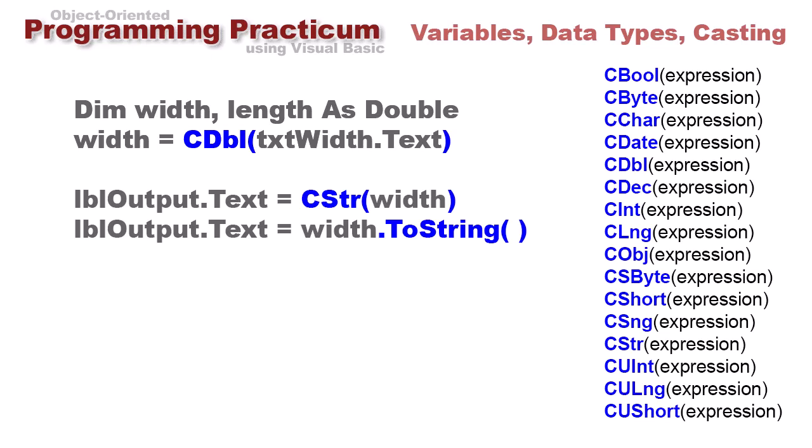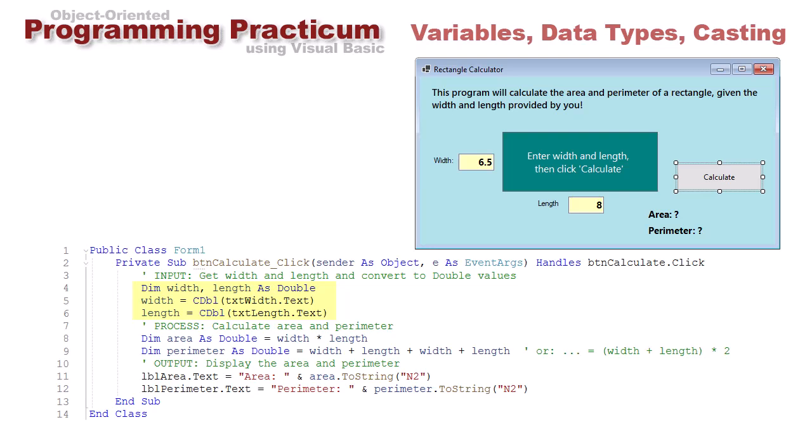More commonly I'd probably use lbl output dot text equals width dot ToString. Either of those statements would work. We see the ToString method used down here for the output of our rectangle calculator. We're taking lbl area dot text equals a little string of "area" and I'm concatenating with the ampersand, adding to that string the numeric value of area converted to a string. Inside the parentheses I have "n2" in quotes, and that means give me two decimal values.